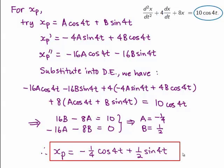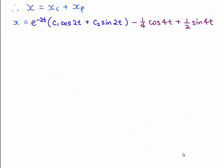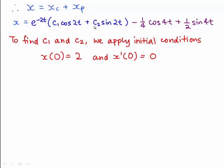Now that we have obtained both xc and xp, we can write down the general solution for this problem, which is e to the negative 2t into c1 cos 2t plus c2 sin 2t, which is the complementary function xc, and the particular solution minus 1 quarter cos 4t plus a half sin 4t. So here, this being the general solution, it has the two coefficients c1 and c2, which we can find by applying the initial conditions. Earlier on, we have already established that the initial conditions are x at 0 equals to 2 and x prime at 0 equals to 0.